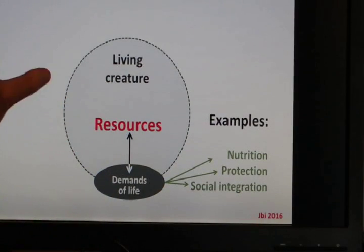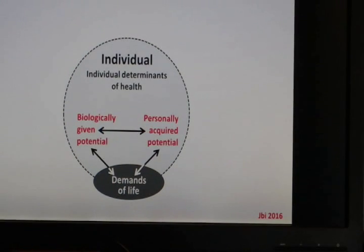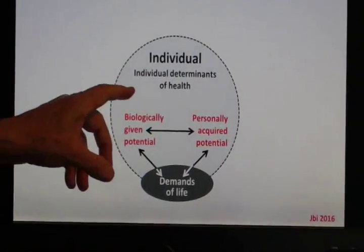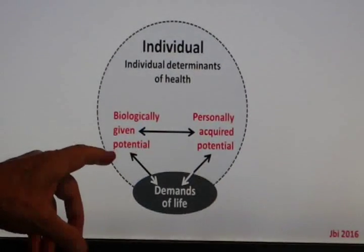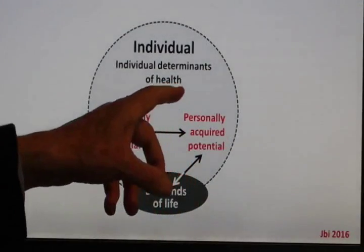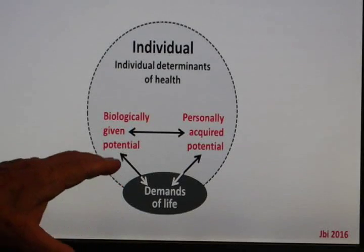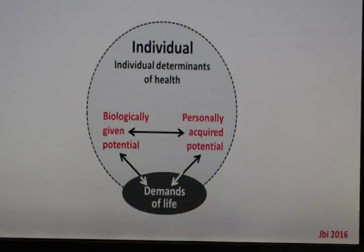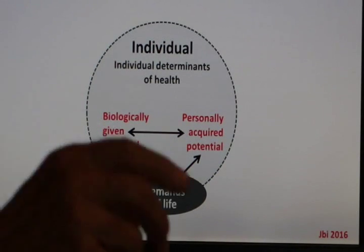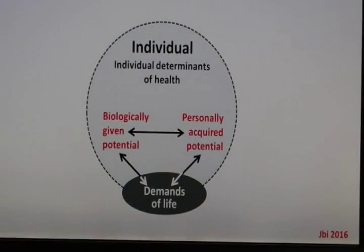In man this is somewhat more complicated, particularly the resources. We have two types of resources: the biologically given potential and the personally acquired potential. We speak of potentials because we need our resources now but we also need them in the near and in the far future.